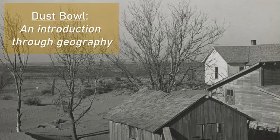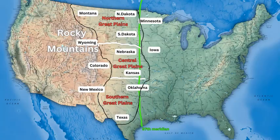The Dust Bowl was centered around the Great Plains and certain states. The Great Plains is a geographical area in the United States that is west of the 97th Meridian, which is a line of longitude. It extends up to the Rocky Mountains and goes from the Mexican border to the Canadian border and into the Canadian prairies.